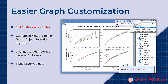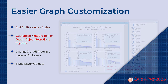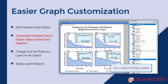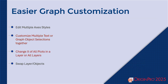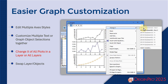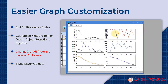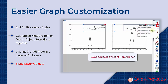Here we're showing off some of the new features for graph customization. You can quickly select all nodes of the same type, and edit multiple graphic objects including text even if they're on different layers. You can also quickly change the X axis for all plots in a graph, and objects can now be swapped according to an anchor system — for example, swapping by top right anchor.